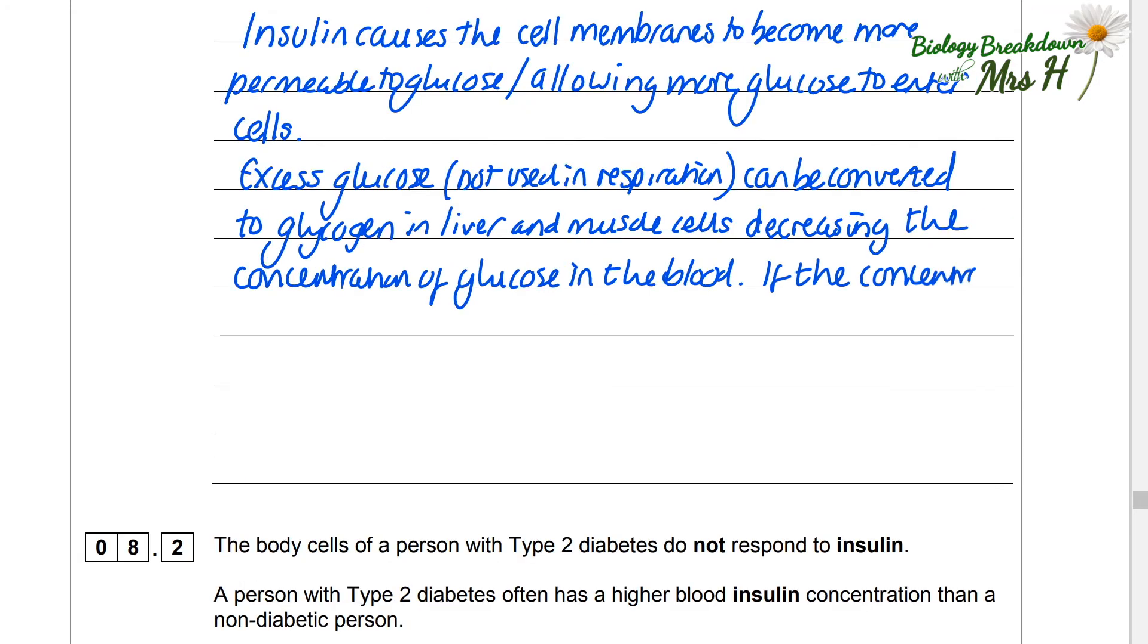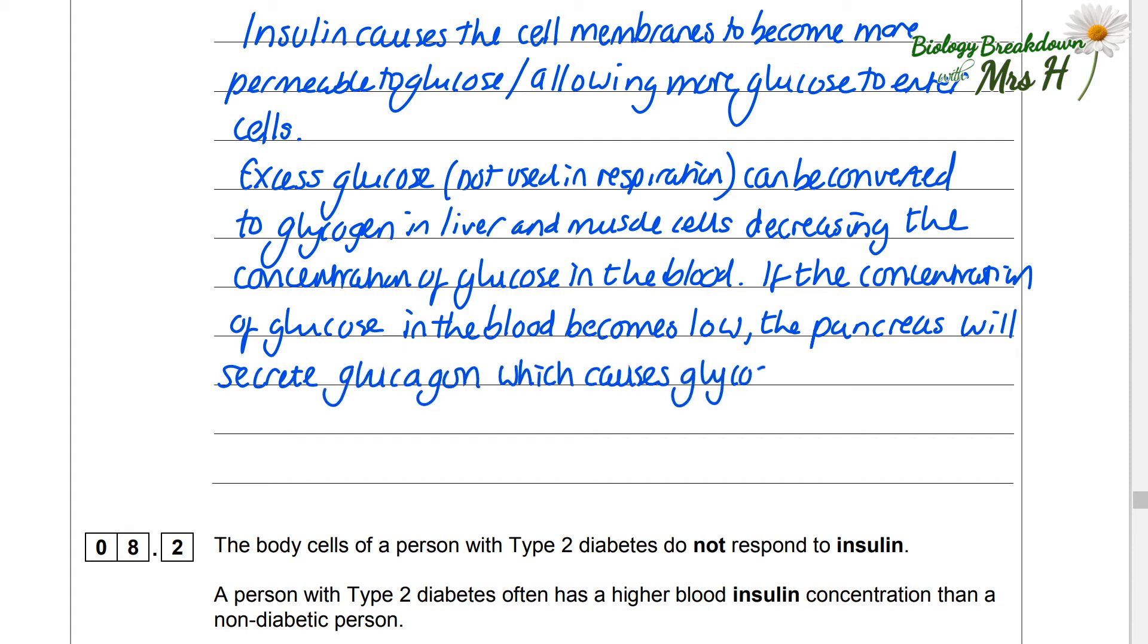If the concentration of glucose in the blood becomes low then the pancreas will secrete a hormone called glucagon and that causes glycogen, stored glucose, to be converted back to glucose and therefore raising the blood sugar level again. Another example of homeostasis by negative feedback.